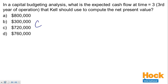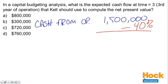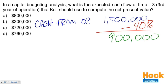Cash from operations is going to be $1,500,000. But we need to remember that we have taxes. We can calculate taxes individually for each item. Taking 40% out of that $1,500,000, what we're left with is $900,000 of after-tax cash flows from operations.